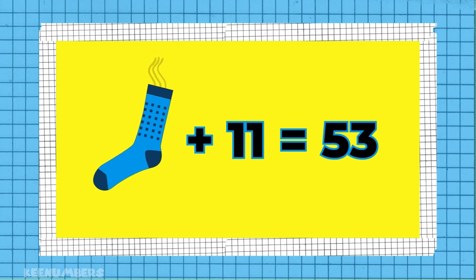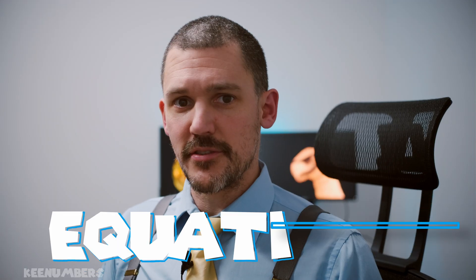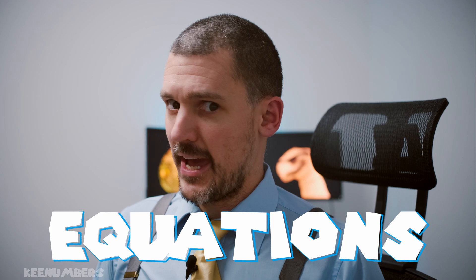One super sock plus 11 pounds is 53 pounds. Equations! What you do on one side, you have to do on the other.